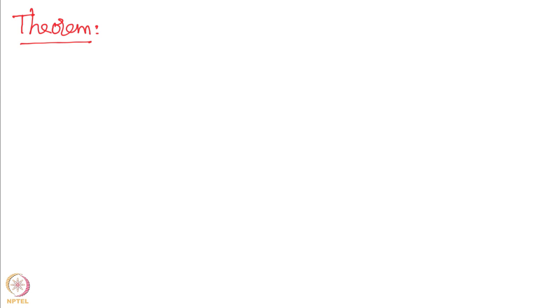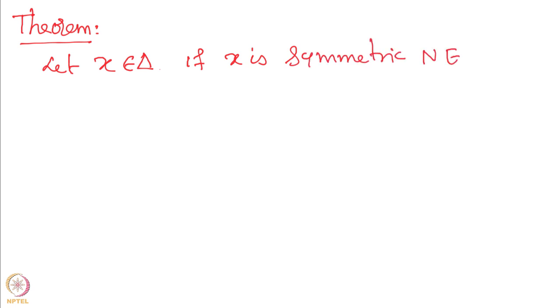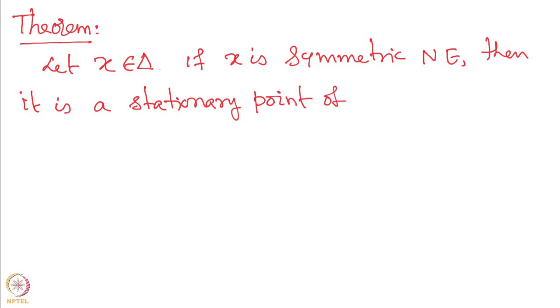Welcome back to this NPTEL course on Game Theory. In the previous session, we introduced replicator dynamics and stated a theorem. We will now complete the proof of that theorem. The statement is: let X be a mixed strategy; if X is a symmetric Nash equilibrium, then it is a stationary point of the replicator dynamics.